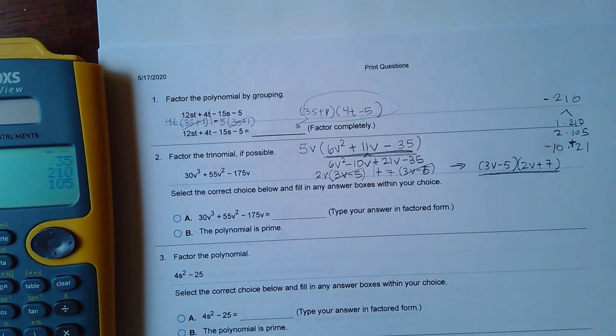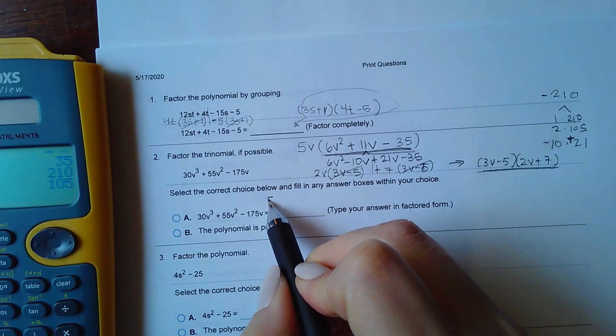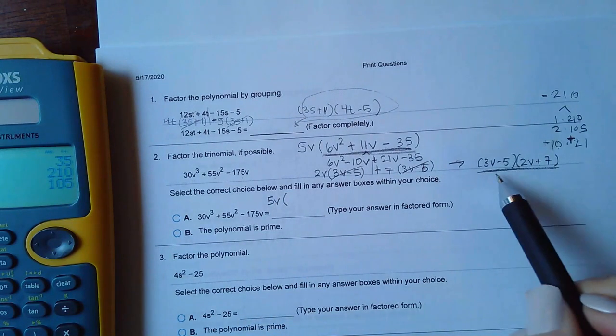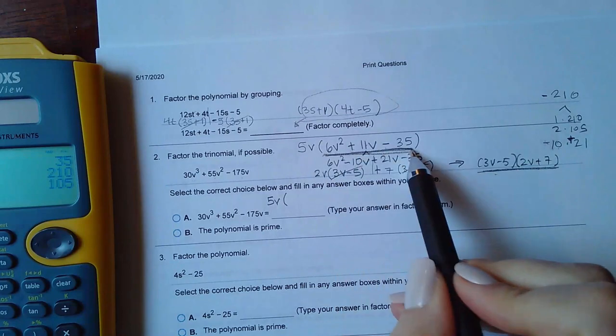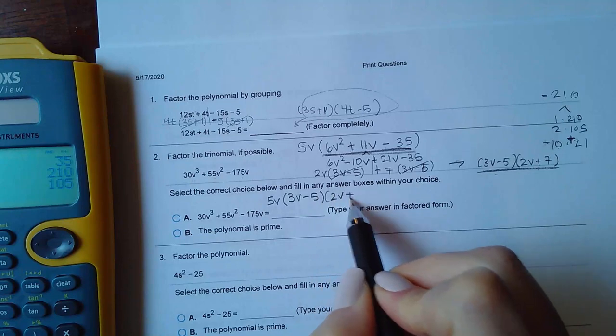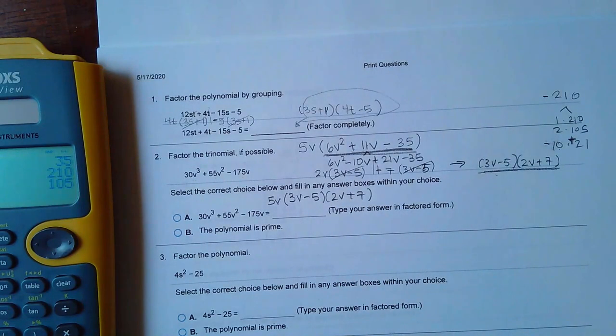This is what I got for what was in the parentheses, so the final answer actually has to be typed in as the 5v that you originally factored out and then these two factors which represent that trinomial. This is the entire factored form of the answer.